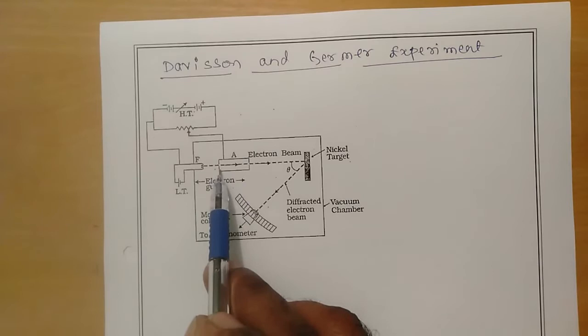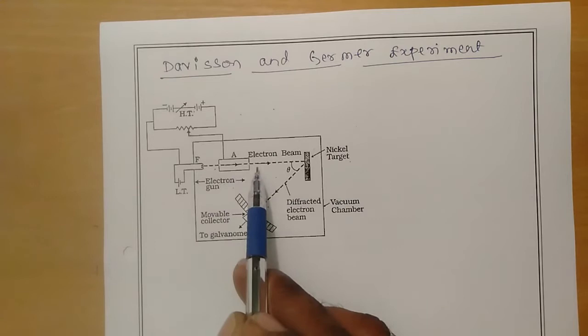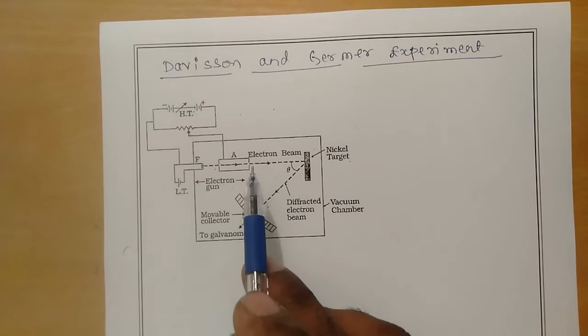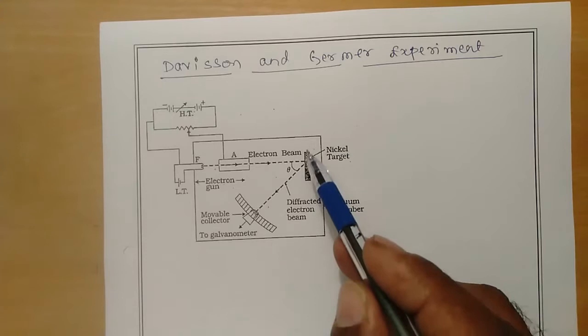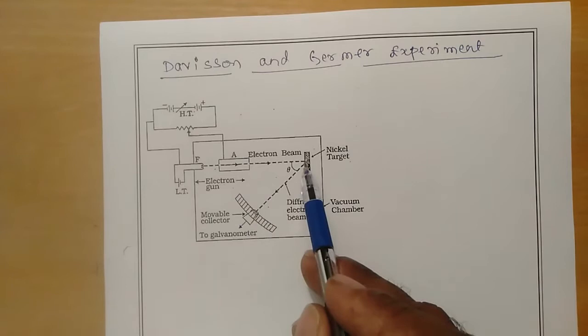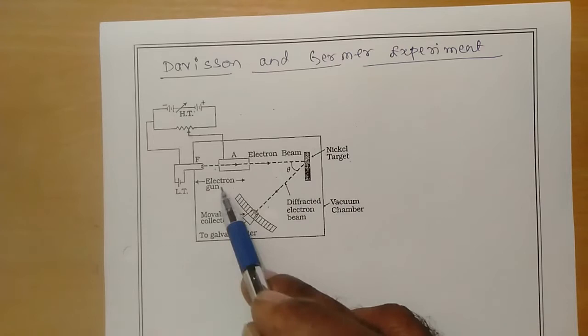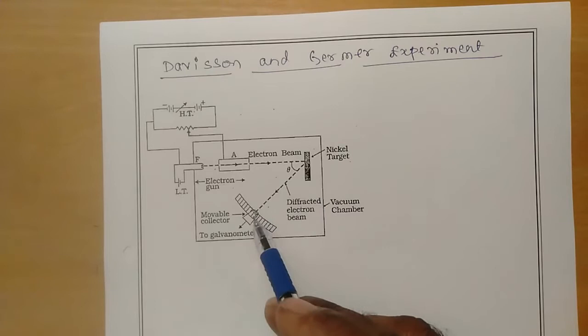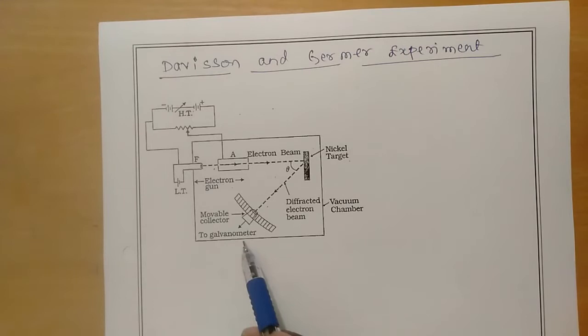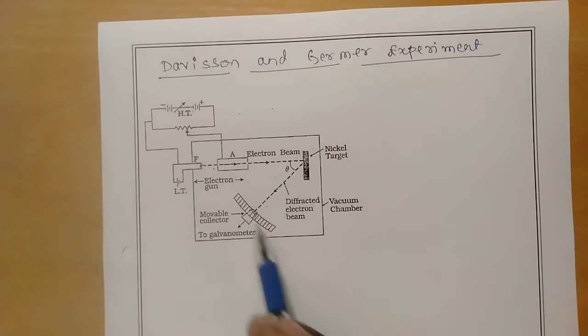The electrons coming out of this anode or cylinder will form a collimated beam of electrons. These collimated beam of electrons are made to fall on the nickel target. Whenever this collimated beam of electrons falls on the nickel target, the electron beam is scattered in all directions. The electrons scattered by the nickel target are detected by a detector connected to a sensitive galvanometer, and this detector can be moved on a graduated scale.